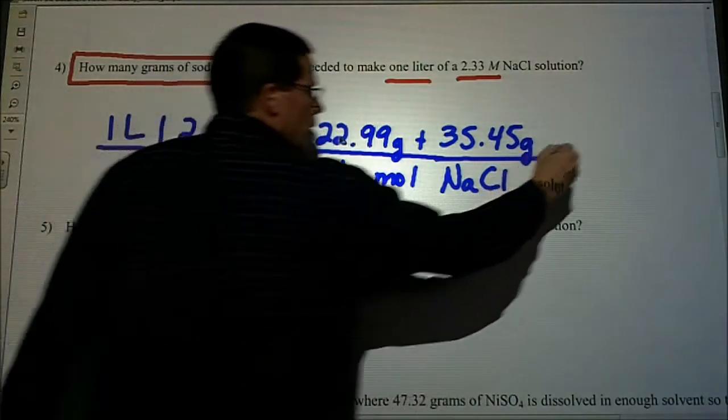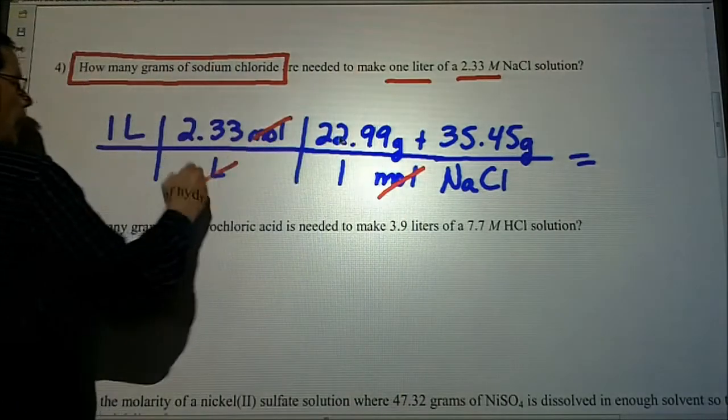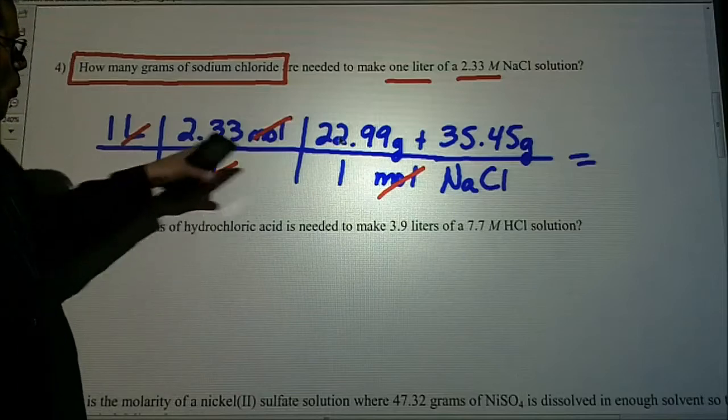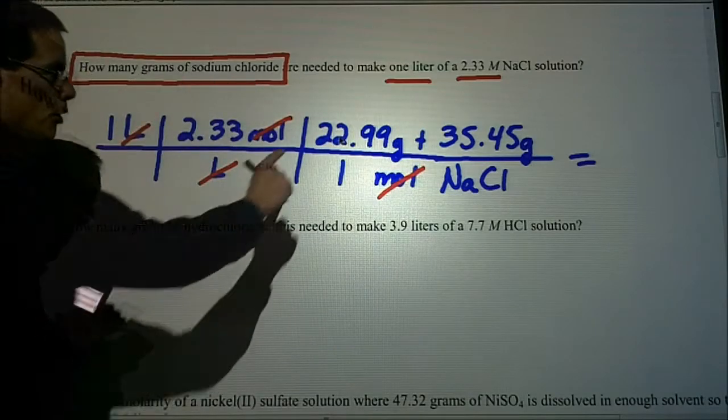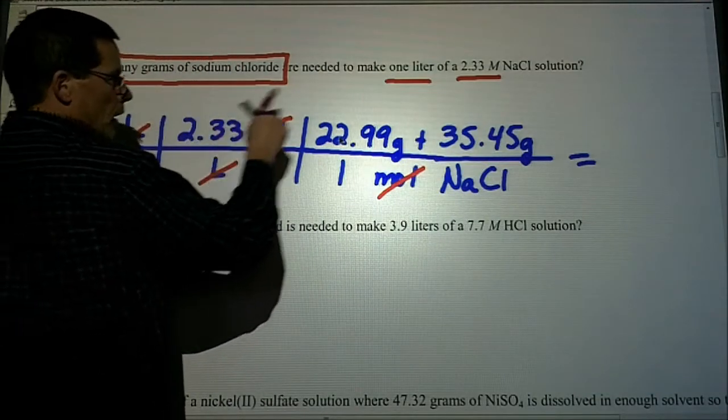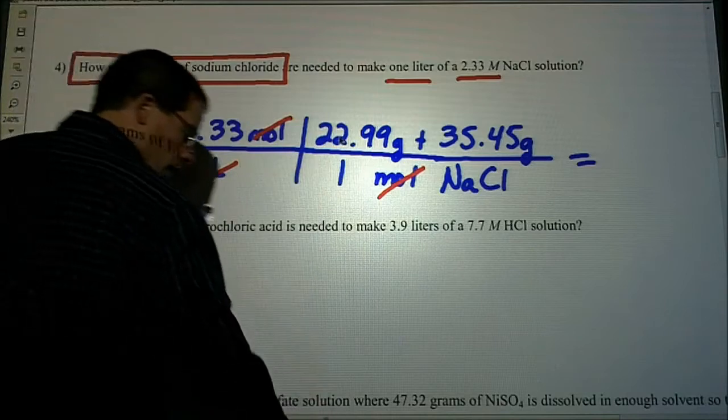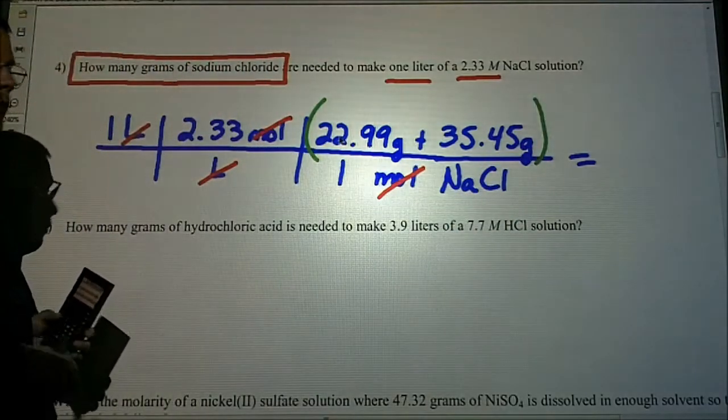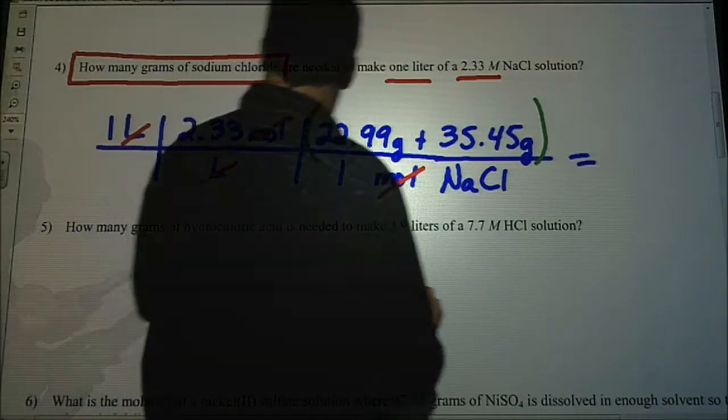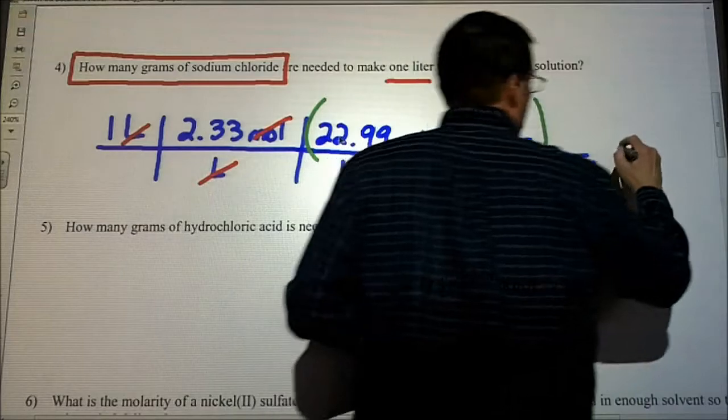Cancel out the units. We can cancel moles, we can cancel liters, and we have the unit that we're looking for, which happens to be grams. Use your parentheses. What you don't want to do is 2.33 times 22.9 plus that. So on your calculator, go ahead and put that in parentheses. That'll keep you from getting in trouble there.